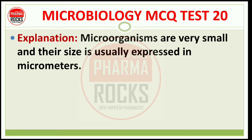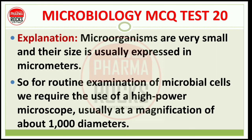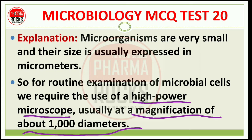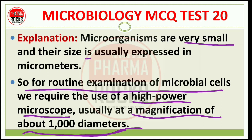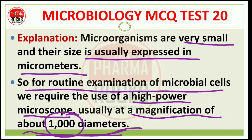Explanation: Microorganisms are very small and their size is usually expressed in micrometers. For routine examination of microbial cells, we require the use of high power microscope, usually at a magnification of about 1000 diameters. Microorganism को हम directly नहीं देख सकते हैं — they are very small and their size is usually expressed in micrometers. इसीलिए हमें microscope चाहिए, with magnification of 1000 diameter.